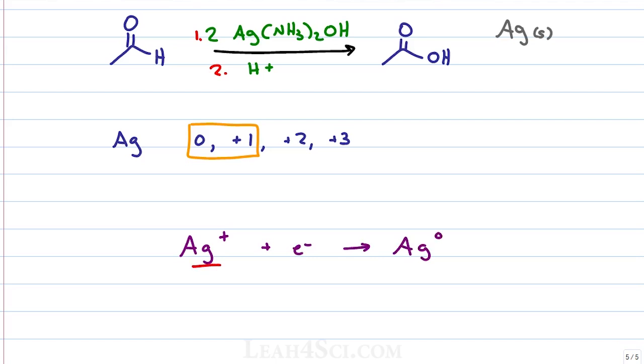Ag plus is aqueous, it dissolves in solution and therefore colorless. Ag0 is a solid precipitate and in high enough concentration will be visible as a shiny metallic silver.